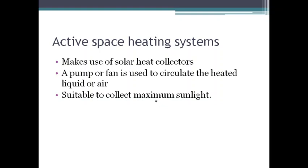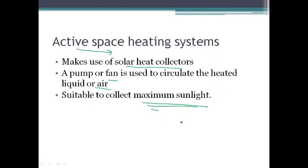In the active space heating system, we use pumps or fans to circulate the heated liquid or air, and even those pumps and fans can be powered by solar heat collectors. An active system actively circulates air through the room and has maximum efficiency, making it more suitable to collect maximum sunlight compared to a passive system, which takes more time to heat up a room. This is especially useful in countries situated towards the poles where sunlight is less available.